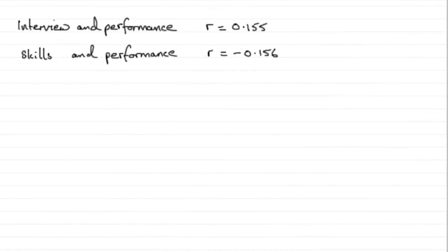Okay then, now for this part, using part A, we know that the product moment correlation coefficient R we worked out for interview and performance turned out to be 0.155.